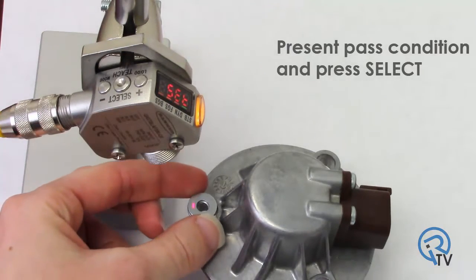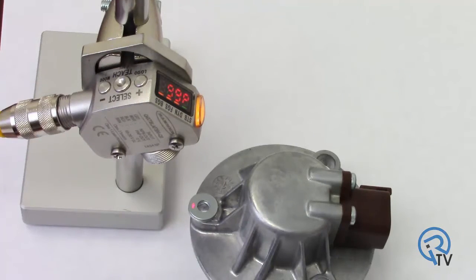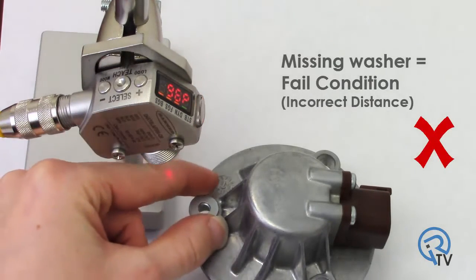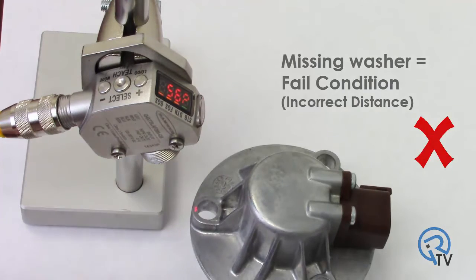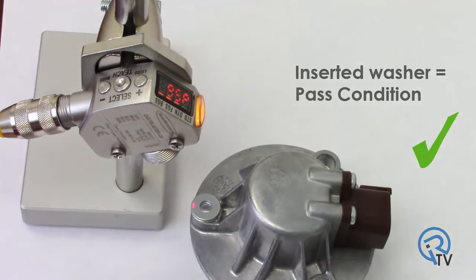Present the pass condition and press Select. The sensor will now trigger a fail condition when the washer is not present. The sensor will trigger a pass condition and illuminate the LED output when the correct washer is present.